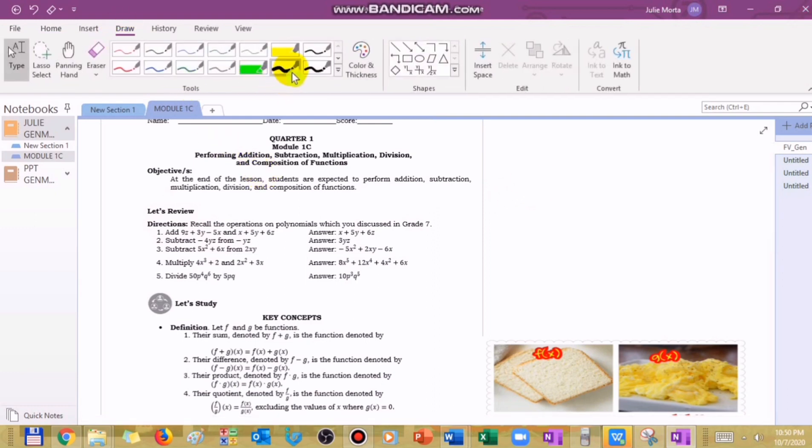In number one, we have to add: 9z plus 3y minus 5x plus x plus 5y plus 6z. This is the first polynomial, and then we have the second polynomial. In adding polynomials like this, what you're going to do is just simply combine like terms.